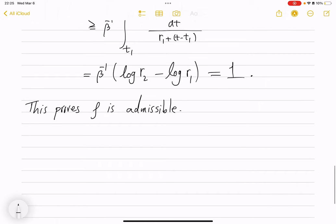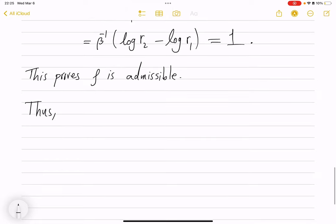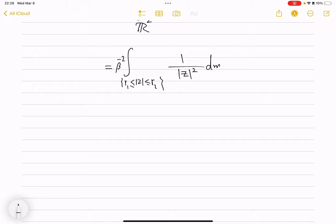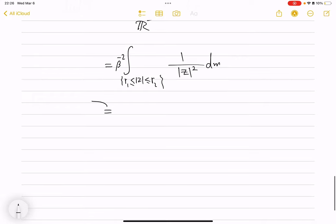So, we have one admissible function. Therefore, modulus of gamma is less than or equal to integral of this particular ρ that we had, against Lebesgue 2 measure, over R2. But this is integrating over the annulus, r1 and r2. The function, we have beta inverse to the power 2. So, that will be beta to the negative 2. 1 over z to the power 2 dm.